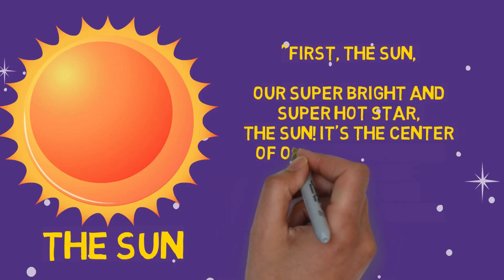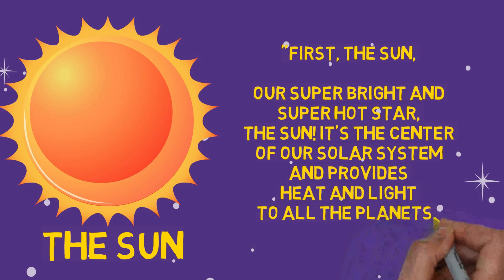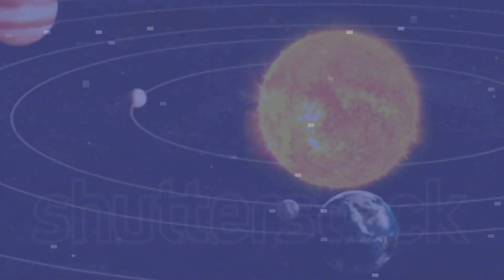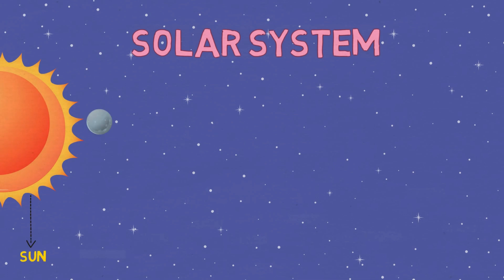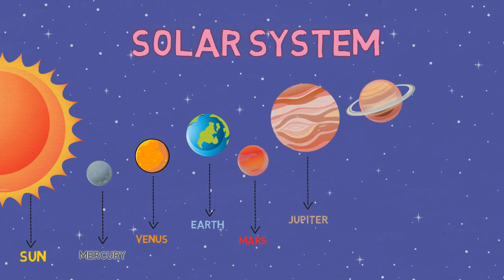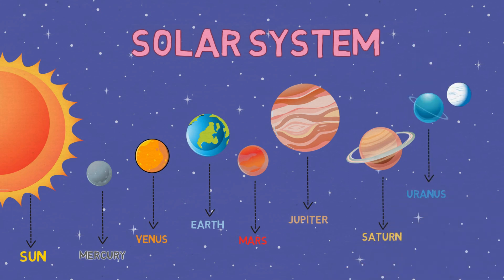The sun is the center of our solar system and provides heat and light to all the planets. There are eight planets in our solar system: Mercury, Venus, Earth, Mars, Jupiter, Saturn, Uranus, and Neptune. Each one is unique and has its own special features.